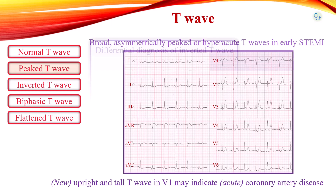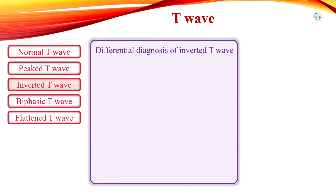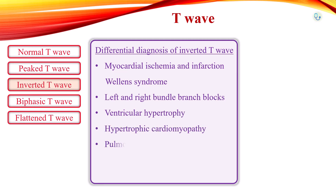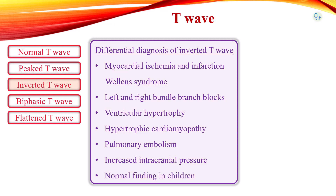Differential diagnosis of inverted T-waves includes myocardial ischemia and infarction, Wellen's syndrome, bundle branch blocks, strain patterns in ventricular hypertrophy, hypertrophic cardiomyopathy, pulmonary embolism, and increased intracranial pressure. Inverted T-waves may be a normal finding in children, and a single T-wave inversion in lead 3 or AVF can be considered a normal variant.